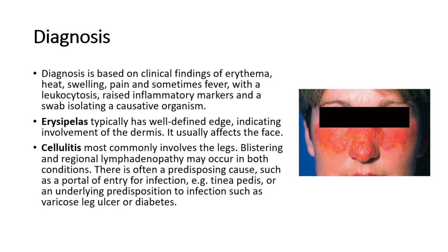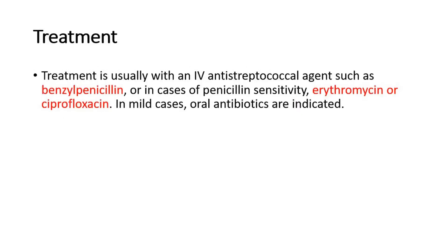Blistering and regional lymphadenopathy may occur in both conditions. There is often a predisposing cause, such as a portal of entry for infection like tinea pedis, or an underlying predisposition to infection such as varicose leg ulcer or diabetes. This picture shows erysipelas — look at the blistering encrusted rash with raised erythematous edge. For treatment, it is usually treated with an IV antistreptococcal agent such as benzylpenicillin, or in cases of penicillin sensitivity, erythromycin or ciprofloxacin. In mild cases, oral antibiotics are indicated.